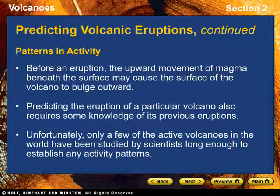Patterns and Activity. Before an eruption, the upward movement of magma beneath the surface may cause the surface of the volcano to bulge outward. Special instruments can measure small changes in the tilt of the ground surface. Predicting the eruption of a particular volcano also requires knowledge of its previous eruptions. Scientists compare the volcano's past behavior with current daily measurements of earthquakes, surface bulges, and changes in the amount and composition of the gases the volcano emits. Unfortunately, only a few active volcanoes in the world have been studied long enough to establish activity patterns. Also, volcanoes that have been dormant for long periods of time may, with little warning, suddenly become active.